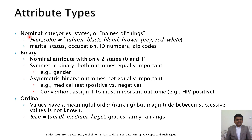First we will see what is a nominal attribute. Nominal attributes indicate categories, states, or names of things — like hair color, which can be blonde, black, brown, gray, red, and white. Next is marital status, occupation, ID number, and zip code. All these are types of nominal attributes.